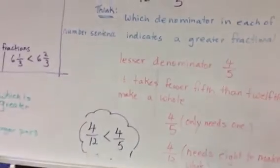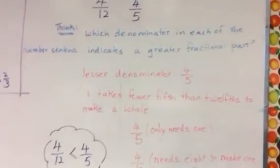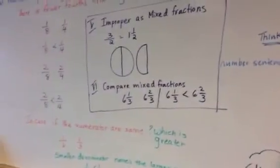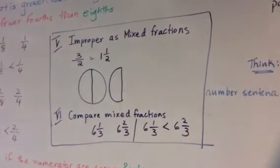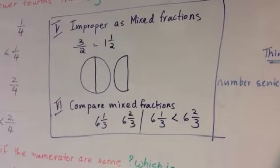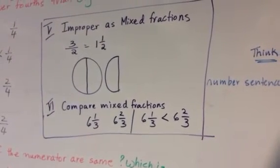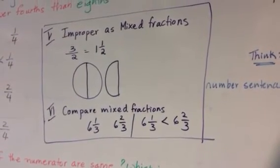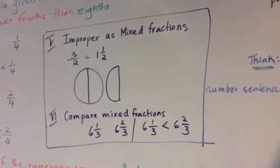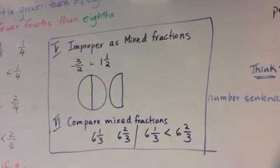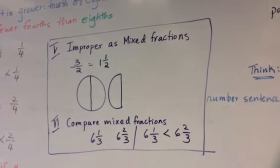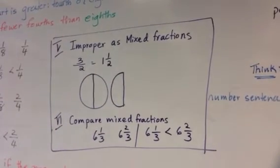Now, the next one you're studying is improper as mixed fraction. Improper fractions. Three over two, three over two is bigger. Three, the numerator is bigger than two. So, denominator is showing how many parts the circle is divided into. If you look at the first circle, it's divided into two parts. But it has an extra half.